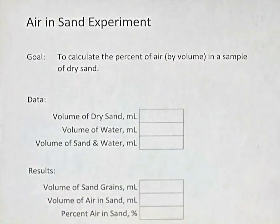So in today's video, we're looking at the air and sand experiment for grade 9 advanced science. In the experiment, our goal is to find the percentage of air in a sample of dry sand, and we're going to do that by measuring volumes.